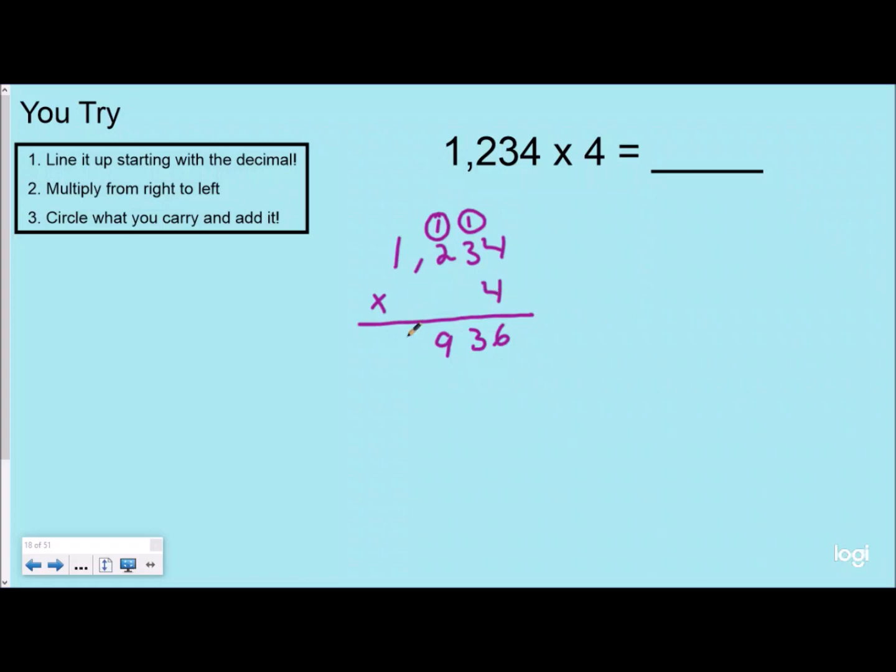Four times 1 is 4, and my product would be 4,936.